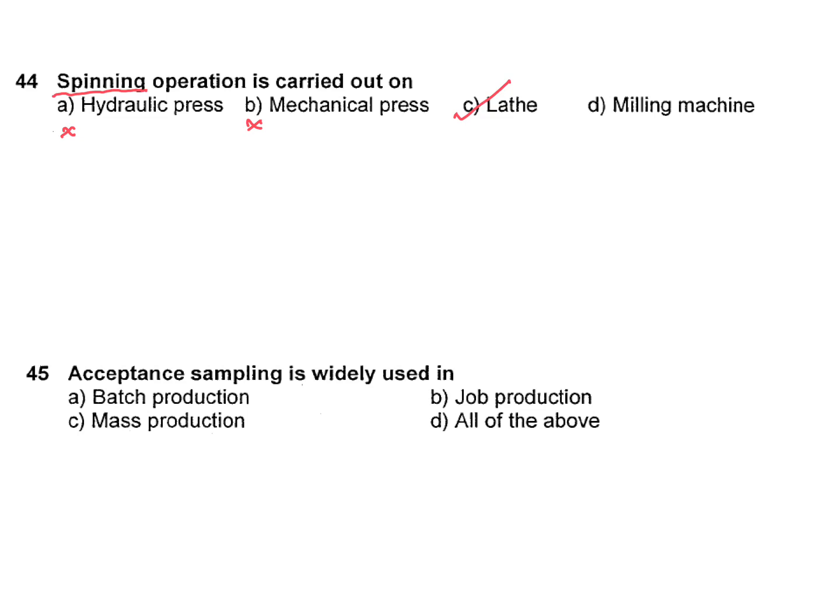Acceptance sampling is widely used in: A — batch production; B — job production; C — mass production; D — all of the above. This is an industrial engineering question. Acceptance sampling is used for batch production, so the answer is A.